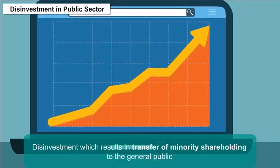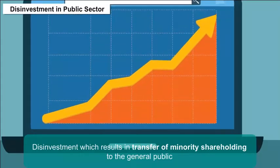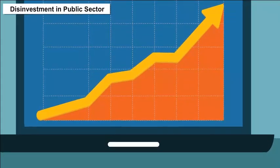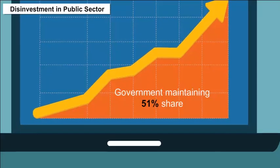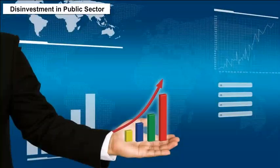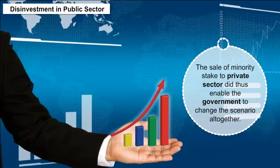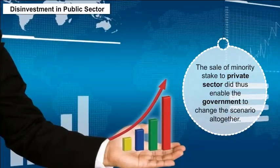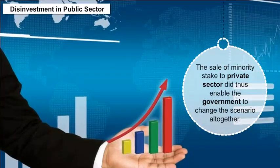Disinvestment resulted in the transfer of minority shareholding to the general public, while the government maintained a 51% share. The sale of minority stake to the private sector enabled the government to change the scenario altogether.